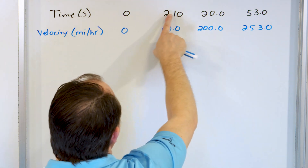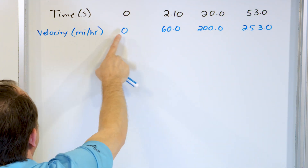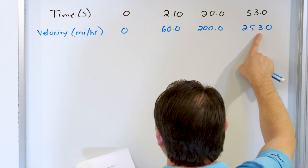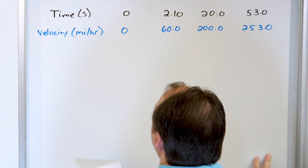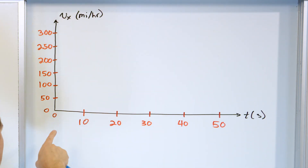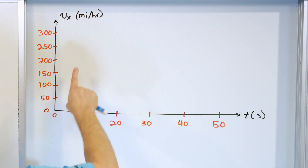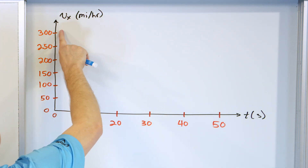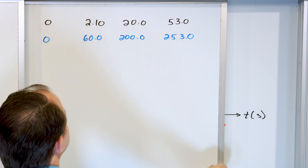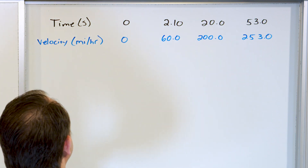We have a time scale going from 0 up to a little past 50 seconds, and a velocity scale going from 0 up to a little bit past 253 miles per hour. The time axis goes up to 50 seconds and the velocity axis in miles per hour goes up to 300, because the biggest number we have is 253.